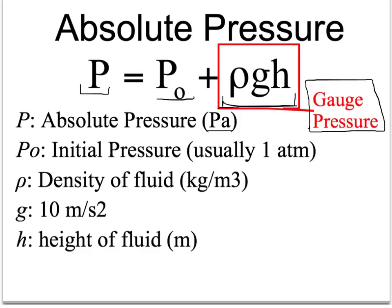These variables are just like in yesterday's video. Rho is the density of the fluid, in kilograms per meters cubed. G is about 10 meters per second squared. And H is the height of the fluid, because as we talked about in class, height is what matters when determining the pressure from a fluid.